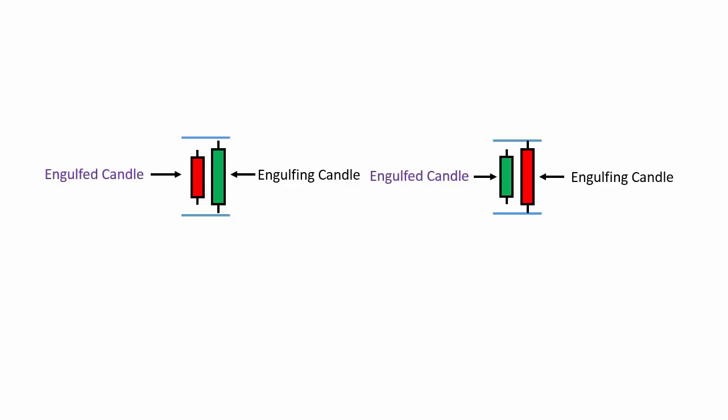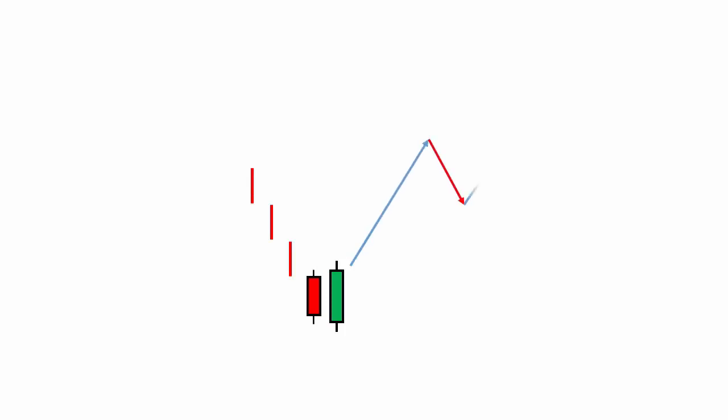If a strong bullish candle engulfs the total range of the previous bearish candle, then this candlestick pattern is named as the bullish engulfing candlestick pattern. Bullish engulfing candlestick pattern tends to form at the bottom of a trend, where after a bearish rally a strong bullish candle appears and engulfs the previous bearish candle's range. After that, the price goes up in the direction of the bullish engulfing candle.